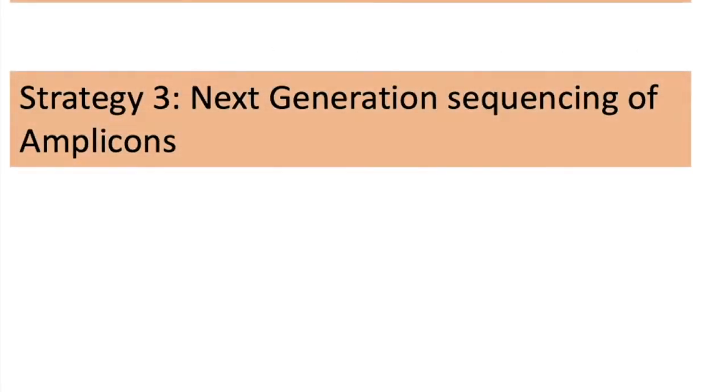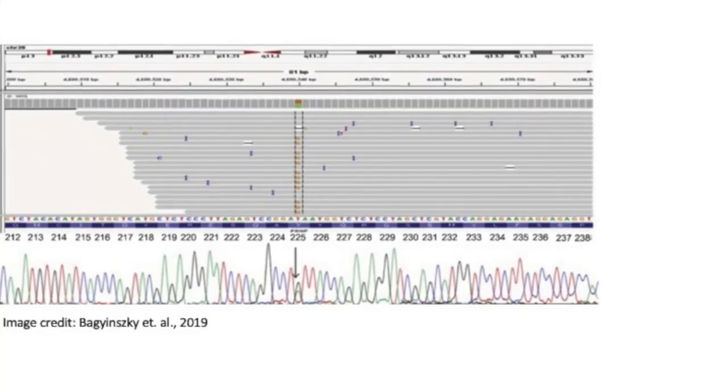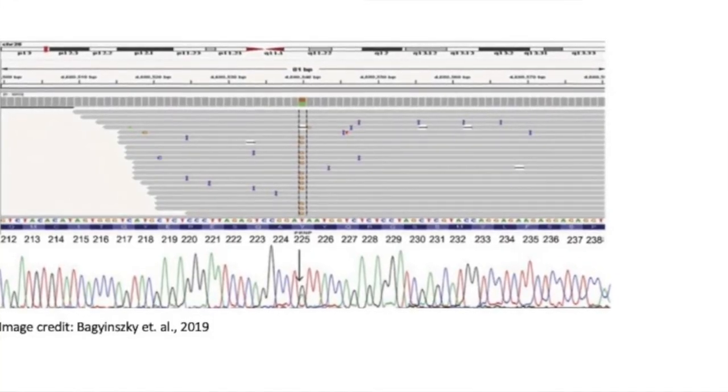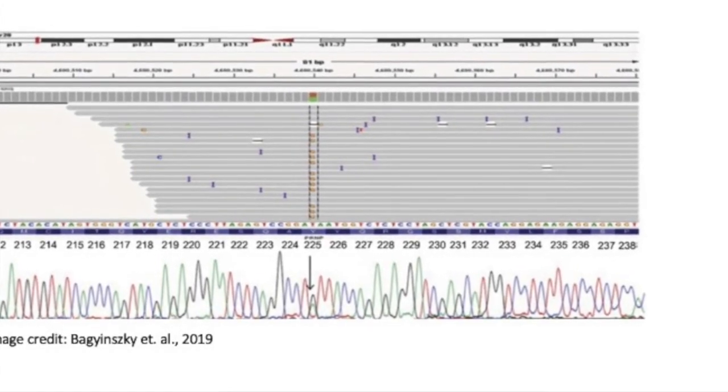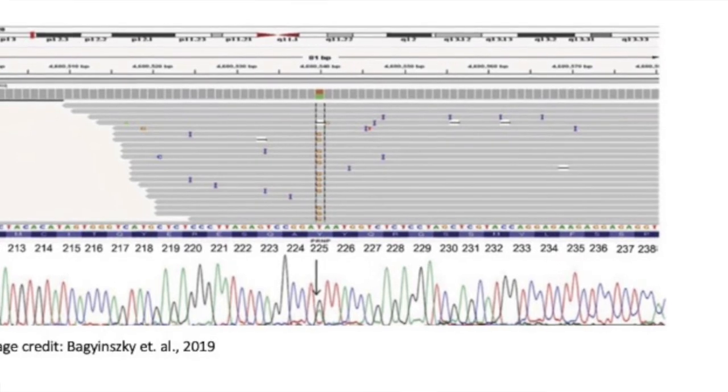But before we get to step two, there is also the option of checking out your edits in the polyclonal population via Amplicon Sequencing using Next Generation Sequencing. So Next Generation Sequencing, you will submit your PCR Amplified region to be sequenced. Now, this is very sensitive, it is quantitative. You're going to be able to look at each individual read.